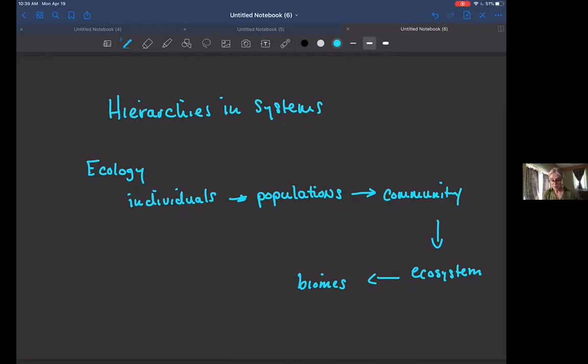So from this biome, then we get to the planet. And remember that as we move up, it becomes more complex. So we're increasing the complexity. We're also seeing that there are unknown stochastic variables that could influence each of these individual components.